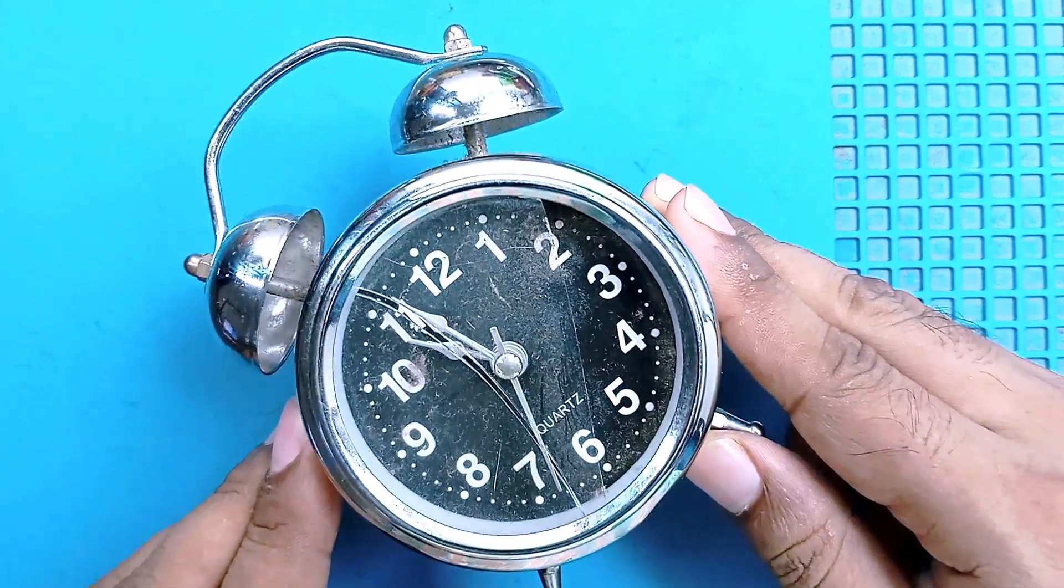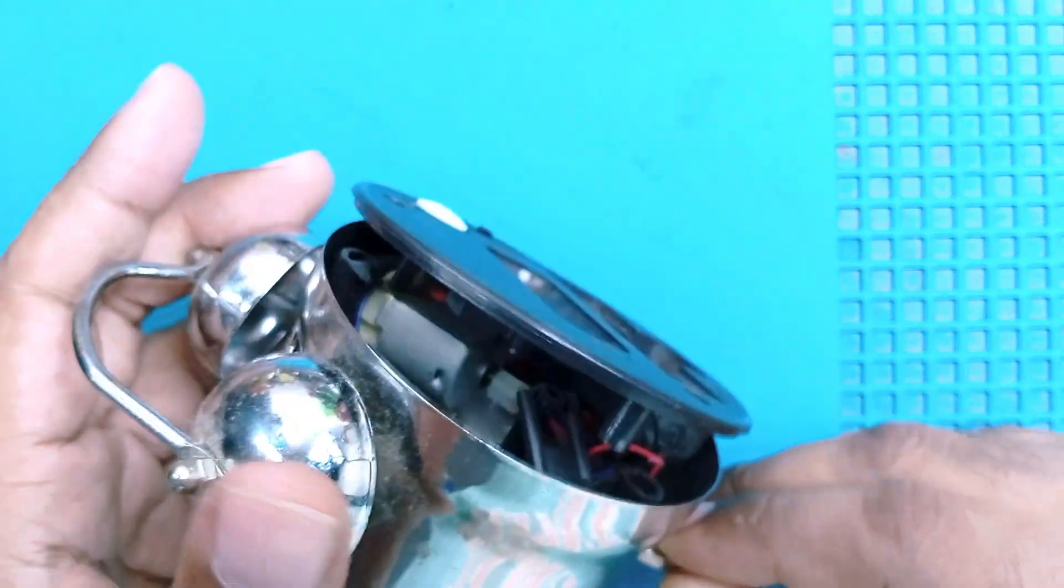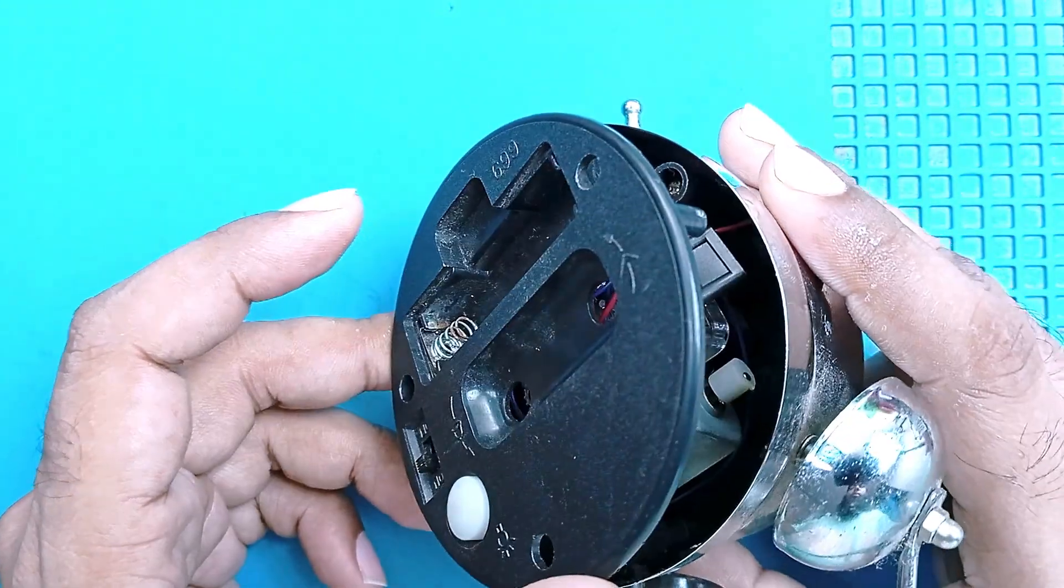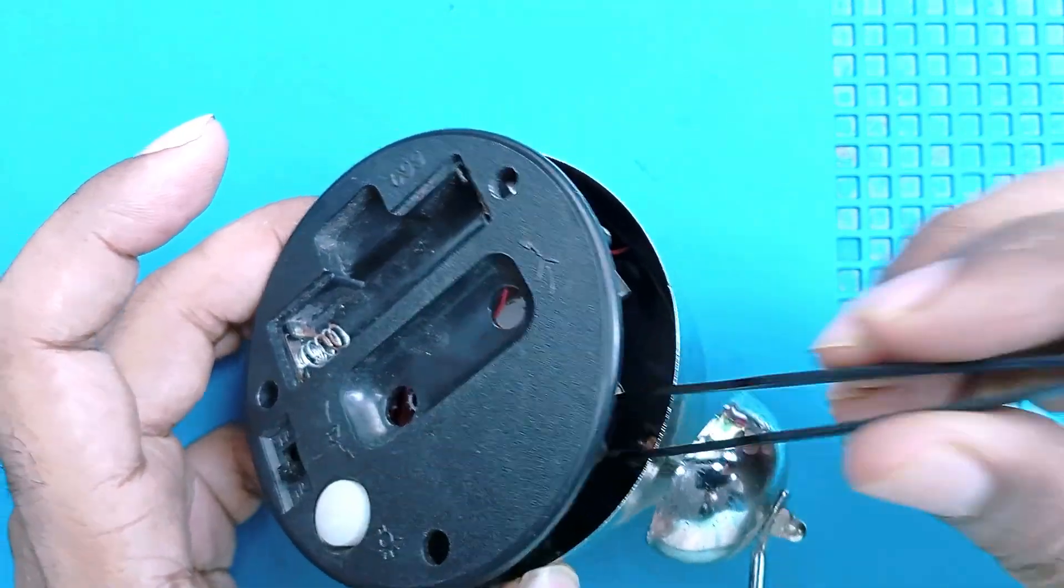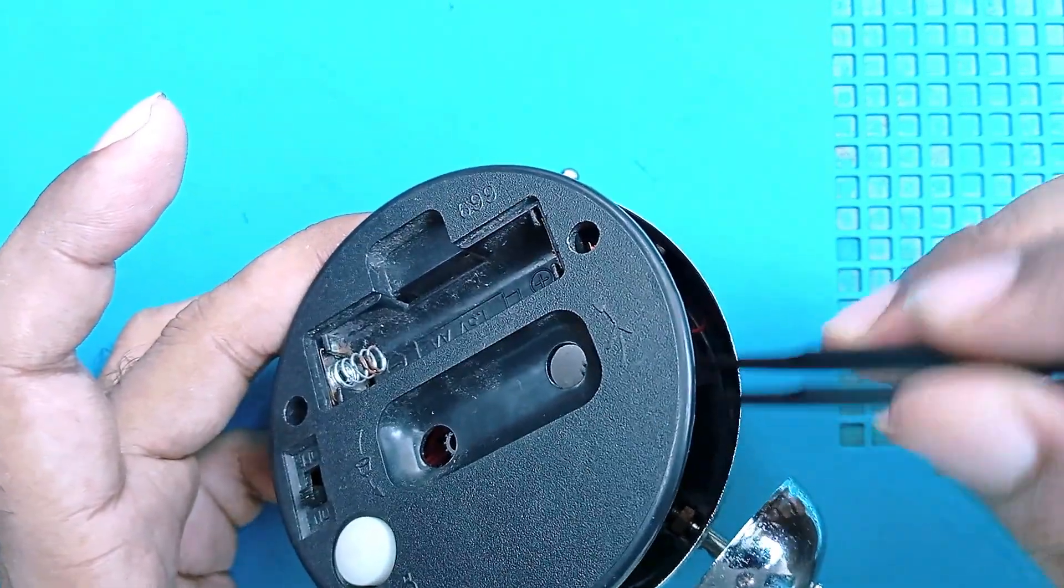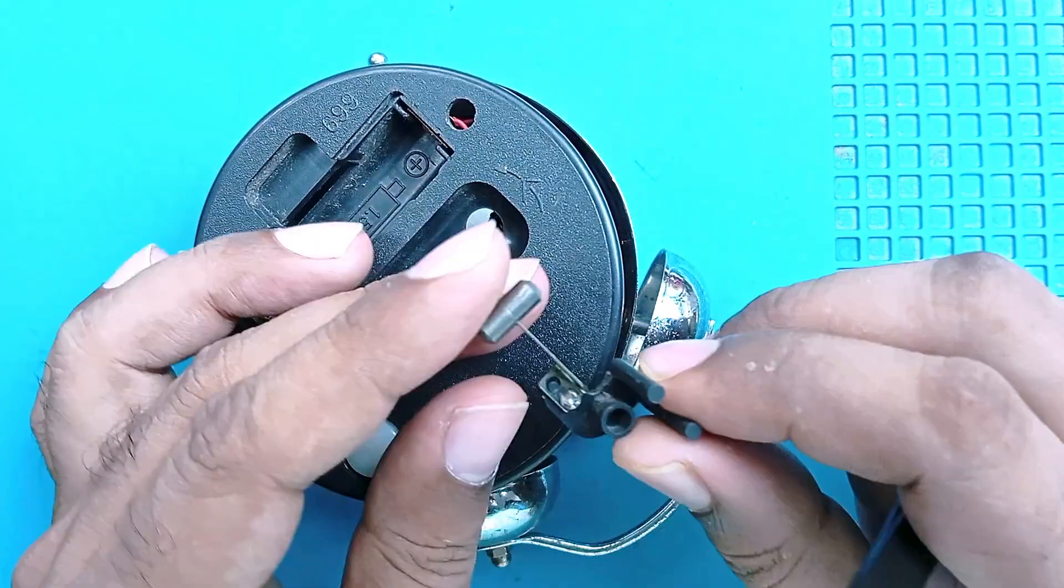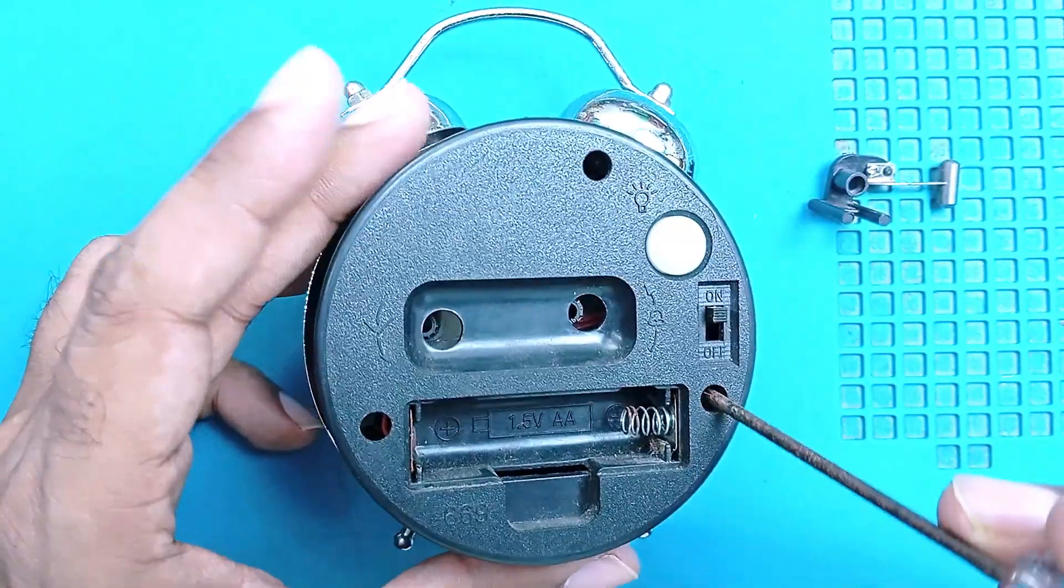Hello viewers, today we have this alarm clock. It's broken, badly broken. You can see the back part is not in its place, and inside the unit we can see the motor is not in the right place. Also, the bell is disconnected from the system. Now we will open this thing and try to repair it.